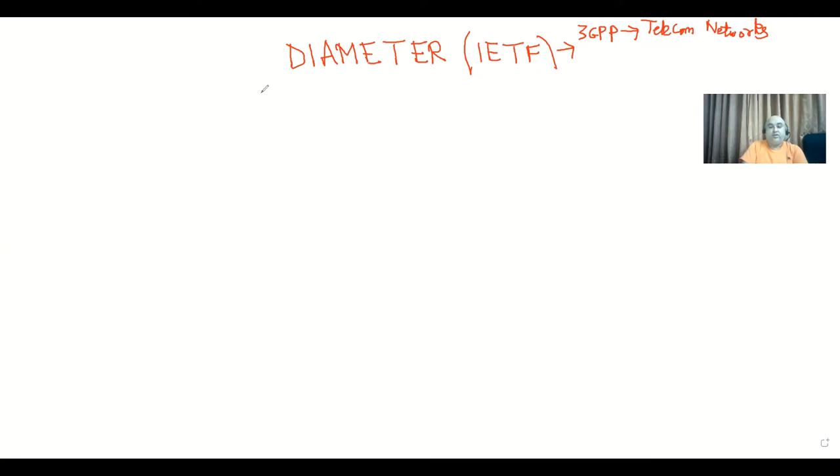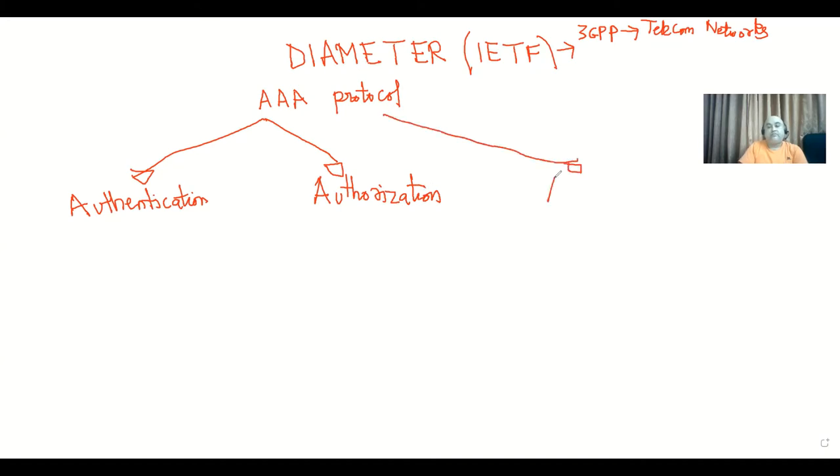So, diameter is what is called a type of AAA protocol. It is a AAA protocol. And what we mean by that is, the first A stands for authentication. And we'll discuss what is meant by each of these A's in slight detail. The second A stands for authorization. And the third A stands for accounting. All right. That's all there is to it.